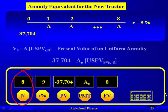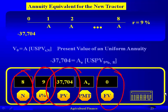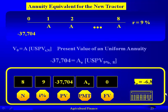So we plug this into our calculator: 8N, 9% I, the present value is negative $37,704. Zero out the future value. We calculate the annuity equivalent, and it comes out to negative $6,812.